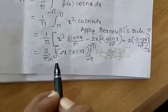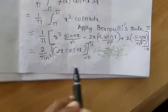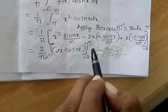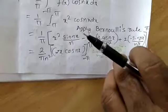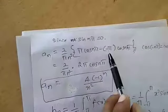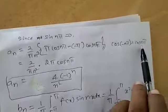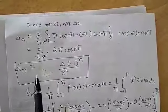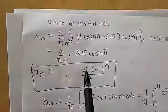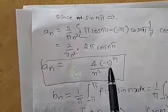Evaluating the limits: sin(nπ) = 0 and sin(−nπ) = 0, so those terms vanish. The remaining term gives (2/π) × (1/n²) × [π cos(nπ) − (−π) cos(−nπ)]. Since cos(−nπ) = cos(nπ), this simplifies to (2/π) × (2π cos(nπ))/n² = 4 cos(nπ)/n². Replacing cos(nπ) with (−1)ⁿ, we get aₙ = 4(−1)ⁿ/n².